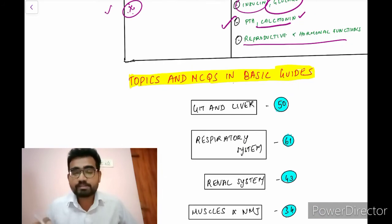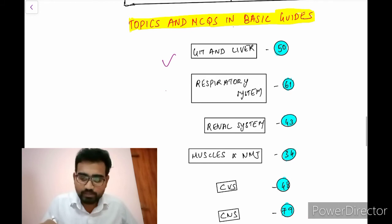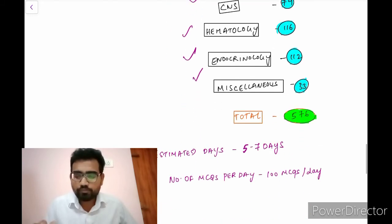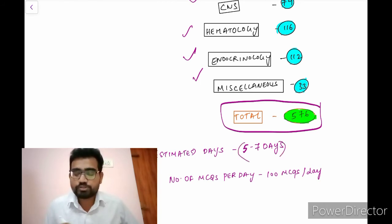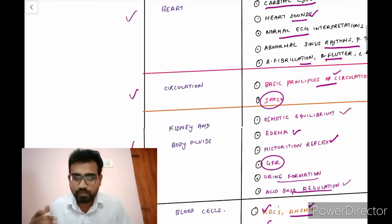So, apart from that, if you look at the basic guides, you will be having these kind of topics that is GIT, RS, renal system, muscle, CVS, CNS, hematology, endocrinology, and miscellaneous. So, if you look at that, the total MCQ which are present here is 576. So, if you look at my timetable, I have framed around 5 to 7 days for physiology. So, if you look at that, approximately, you have to read around 100 MCQs. So, the remaining time, you have to give more importance to the textbooks, all these topics.